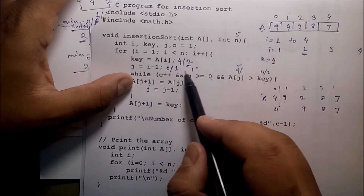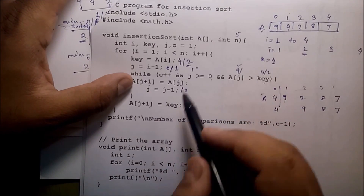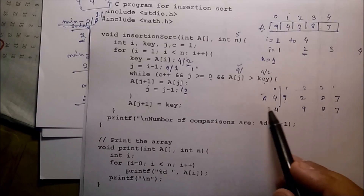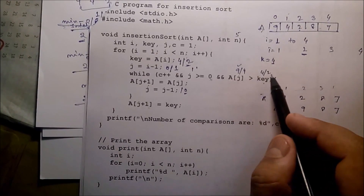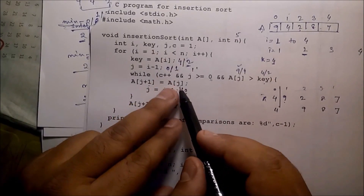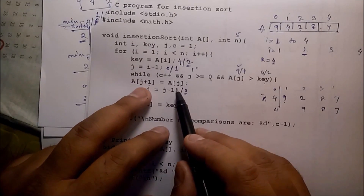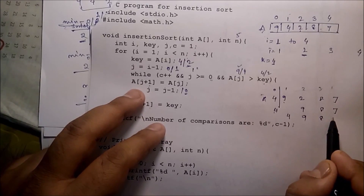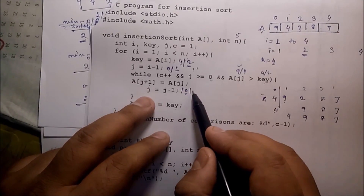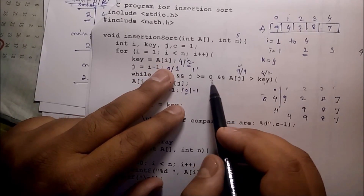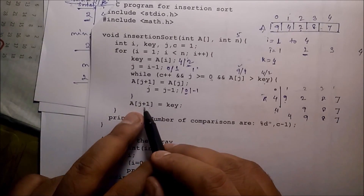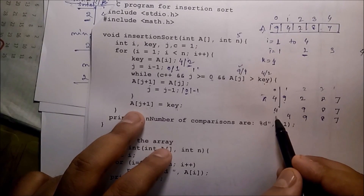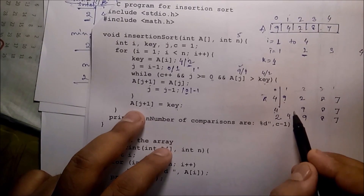j equals j minus 1, so j becomes 0. j greater than or equal to 0 — condition is true. A[0] is 4, key is 2 — condition is true. Transfer A[j] to A[j+1]: A[0] = 4 to A[1]. Now the array values update. j equals j minus 1, j becomes minus 1. Condition is false — come out from the loop. Transfer key value to A[j+1]: j is minus 1, so A[0] = key = 2. Store 2 in A[0]. Sorted part done.